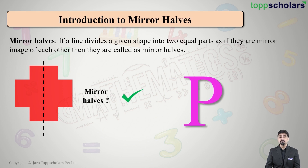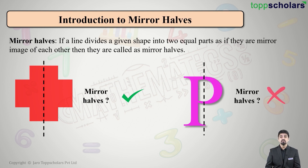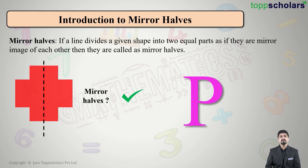Let us take the next example. We have taken the letter P. I draw a vertical line like this. Can I say that the part on the right of the line is the mirror image of the part on the left? No, it cannot be. So will it be a mirror half? No, it is not a mirror half.